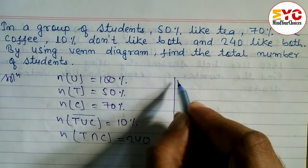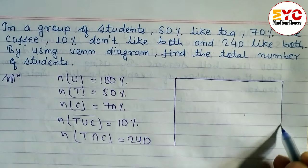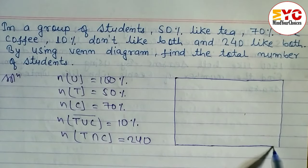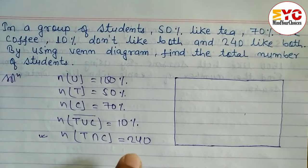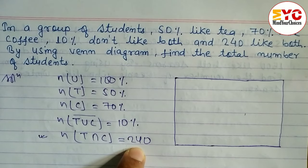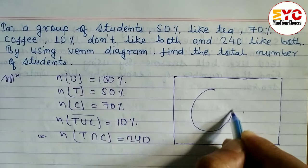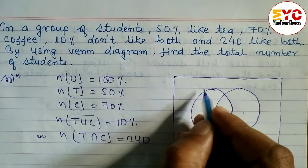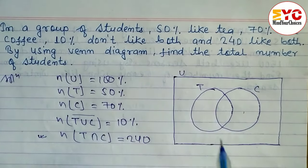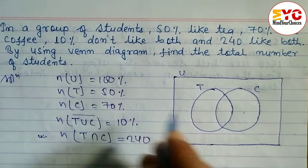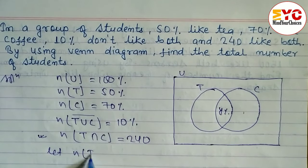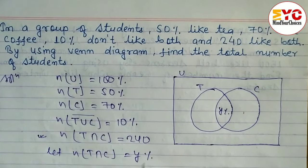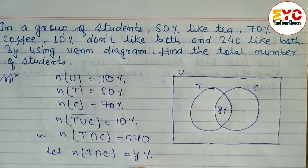Let's draw the Venn diagram first. One thing to keep in mind: every value is given in percentage except one — the intersection 240 is given as a number. So we have to express it in percentage. Let T intersection C = Y percent.